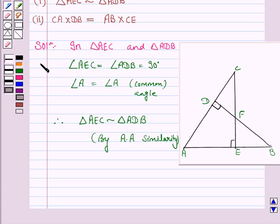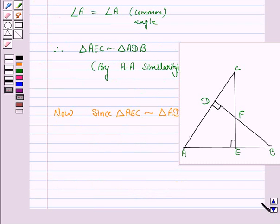Right. So this proves the first part of the question. Now, since triangle AEC is similar to triangle ADB, the ratio of the corresponding sides will be same. Therefore, we have AE upon AD is equal to EC upon DB is equal to CA upon BA.